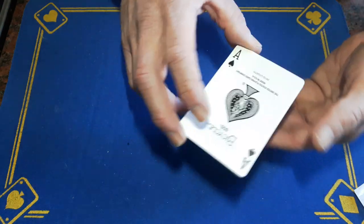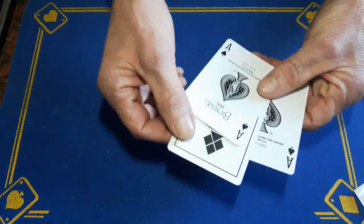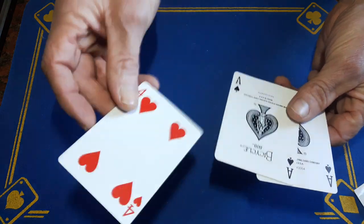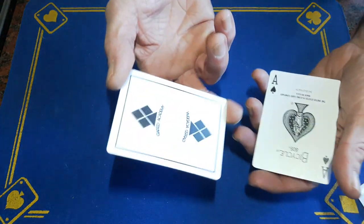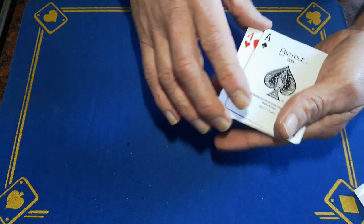But if we give it another little magical wave, we've now got two aces and the card in the middle is the four of hearts. So that's an ace of spades, an ace of spades, and a four of hearts.